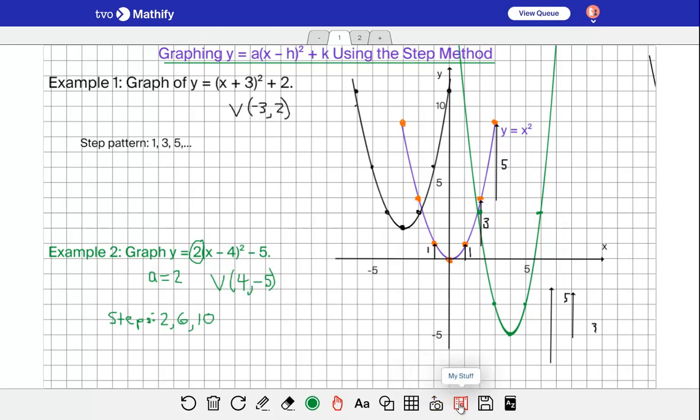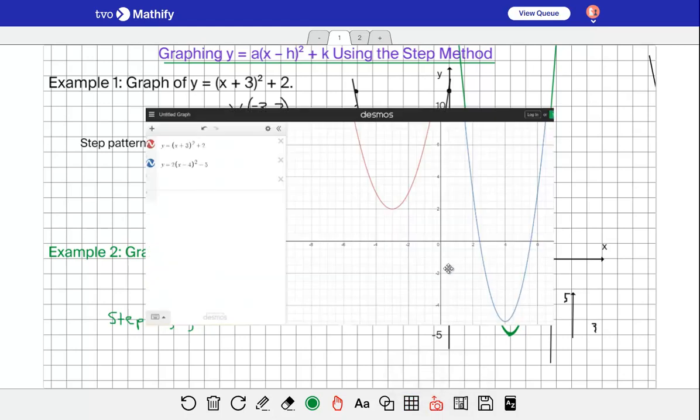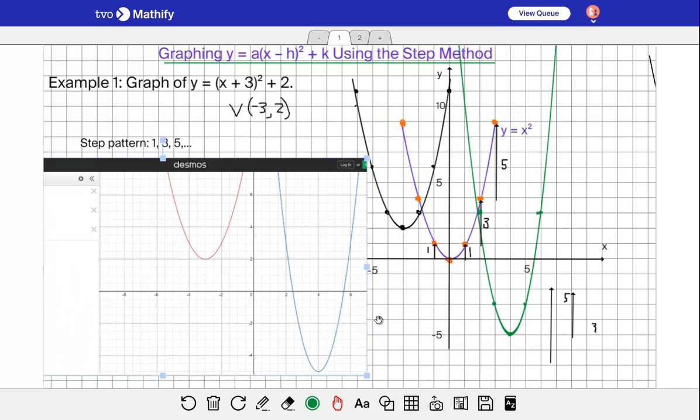Now you could sketch those in Desmos just to check here, so I'm going to upload this image. There's my Desmos graph, and of course you can see that's the red one here is the black one I graphed first, and the blue one is the green one here. You can verify that is correct.